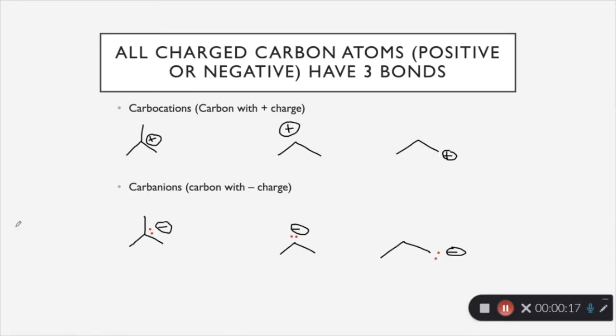So all charged carbon atoms are going to have three bonds regardless of if that charge is positive or negative. A little terminology here: we have carbocations which are carbons with a positive charge and then down here we have carbanions which are carbons with a negative charge. Every single one of these molecules that's drawn has three bonds and so the next slide we're going to see why.